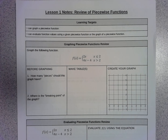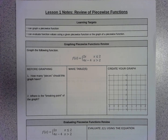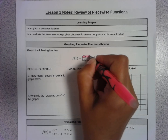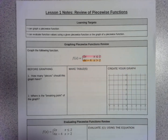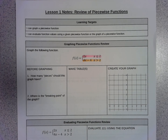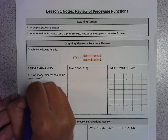Before you start graphing, there are some things to consider. The first idea is: how many pieces should this graph have? Based on this equation, there should be two pieces. The first piece is given by the top part of the equation, and the second piece is given by the bottom part.